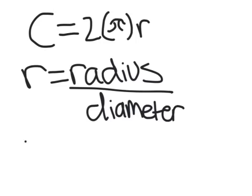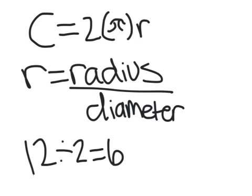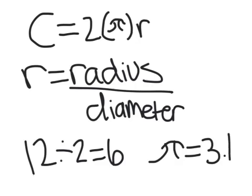That means if the diameter is 12, then you divide it by 2 to get 6, which would be your radius. Pi just stands for a number, but we abbreviate the number to 3.14.